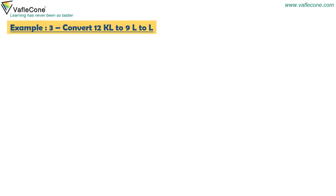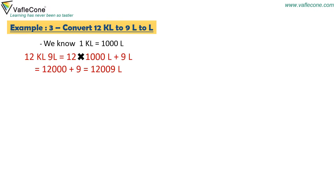Example 3. Convert 12 kilolitres 9 litres to litres. We know 1 kilolitre is equal to 1000 litres. So 12 kilolitres 9 litres is equal to 12 × 1000 litres plus 9 litres, which equals 12000 plus 9, which equals 12009 litres.